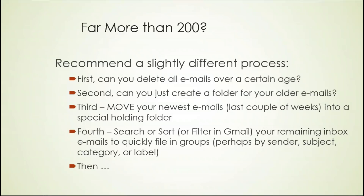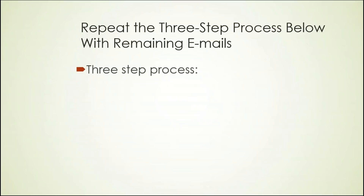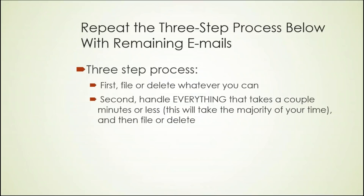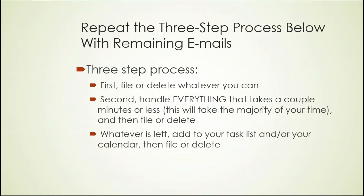Once you do that, you'll have a smattering of leftovers. Sort by subject, sort by sender, maybe sort by date — file as many of those three-week to six-month-old emails into folders as you can. Then take all the newest emails and move them back into your inbox along with those leftover emails. Now it's time for the three-step process again: delete or file whatever you can, handle everything that takes a couple minutes or less, and whatever's left goes onto your task list or calendar — then file or delete.